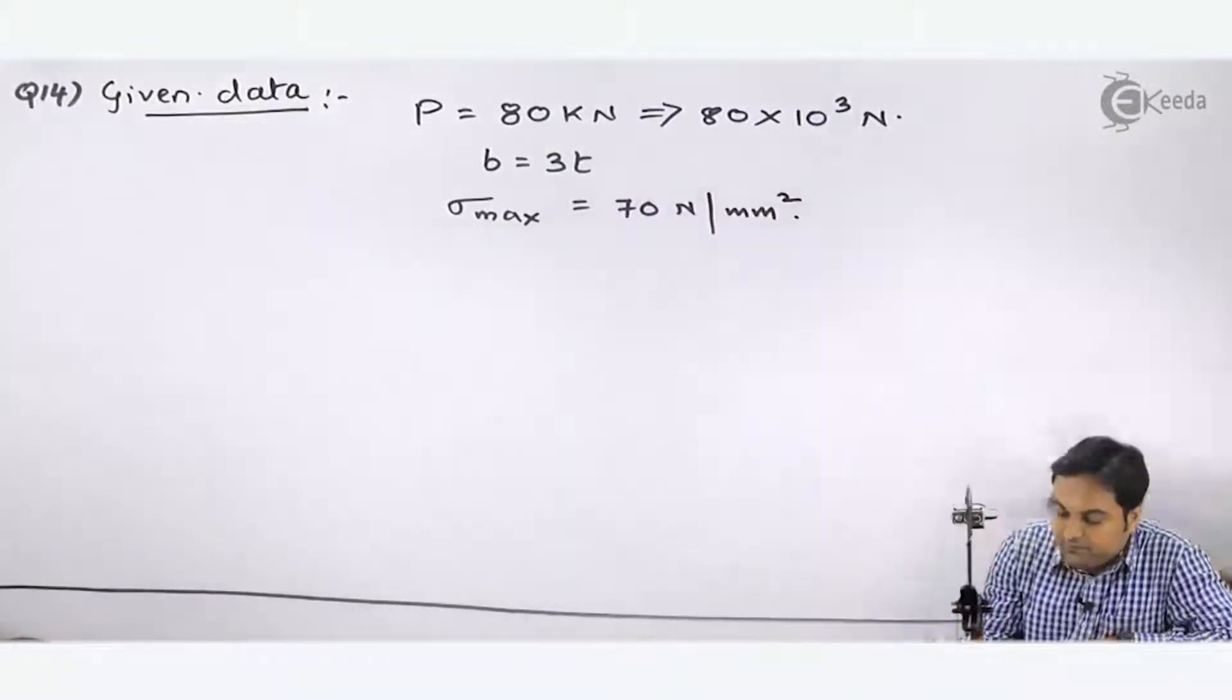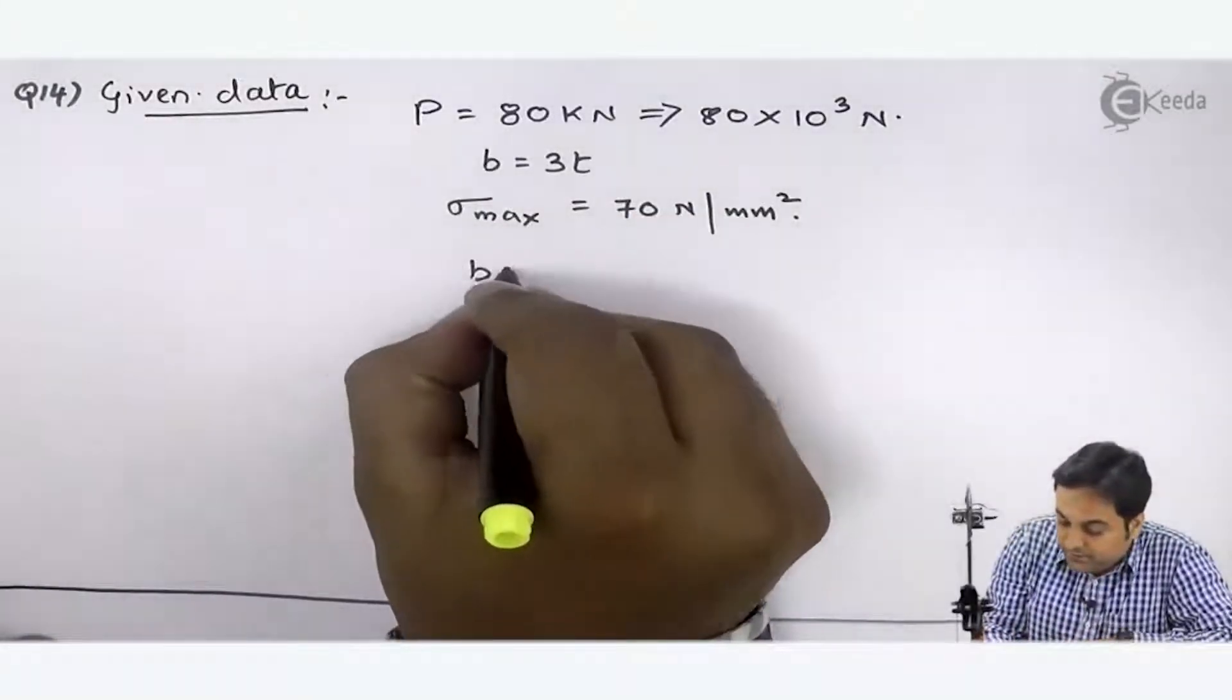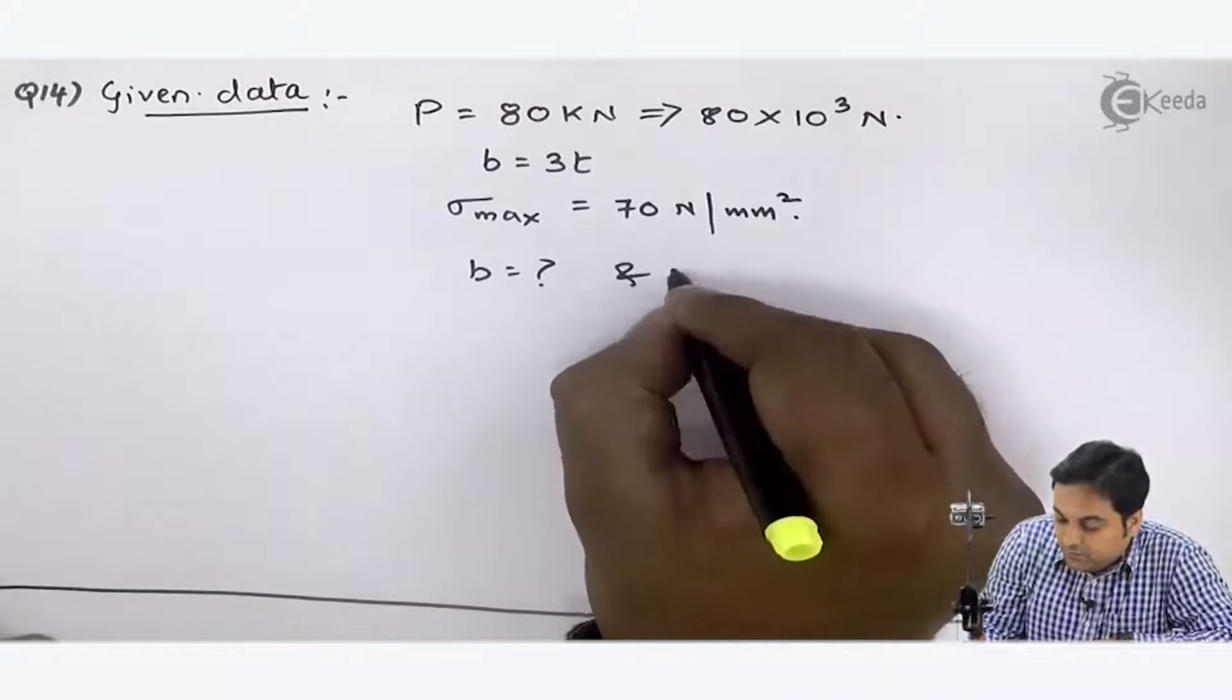Newton per mm square. So here I have to calculate what is B and what is T.